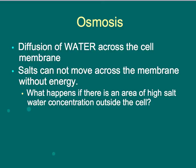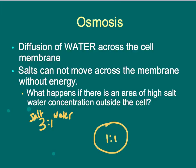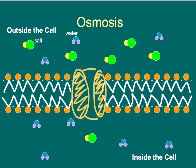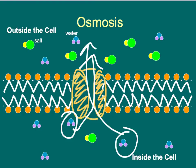What happens if there is an area of high salt water concentration outside of the cell? Let's give it a concentration ratio of 3 to 1 — salt to water outside — and inside your cell you have a 1 to 1 ratio. That means you have more salt to water outside than inside, which means the water is actually more highly concentrated inside. Since water is the thing that can move without energy, it's going to move outside the cell until it reaches equilibrium — the same ratio of salt to water on both sides of the membrane.